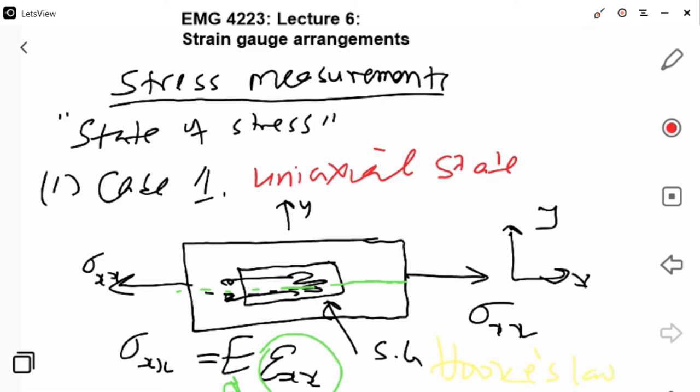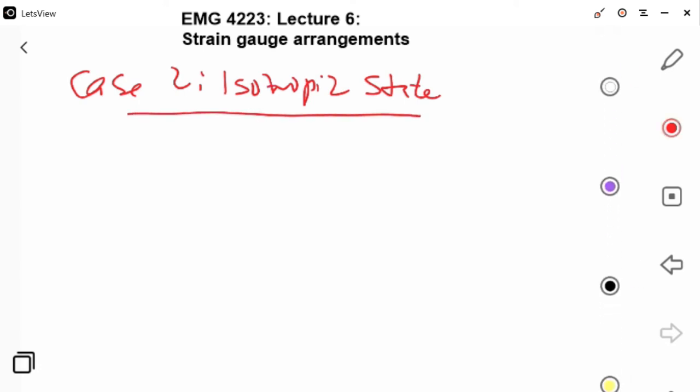The second case, Case 2, is the isotropic state. What happens in this case is the body is subjected to the same stress in all axes.